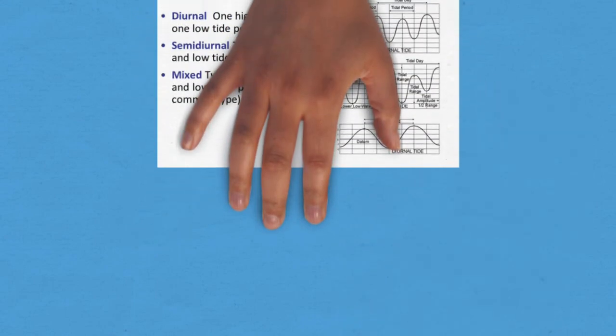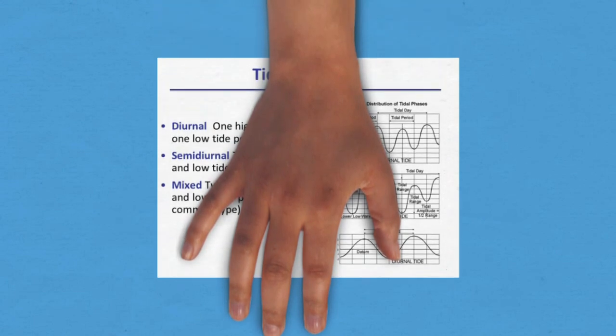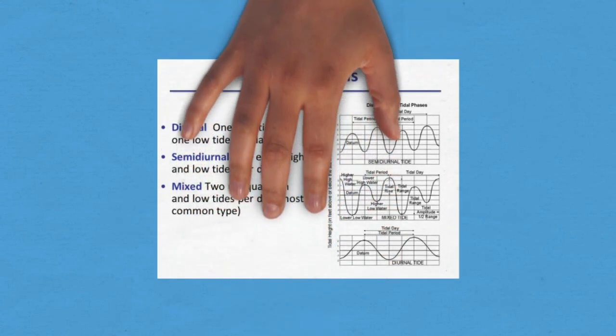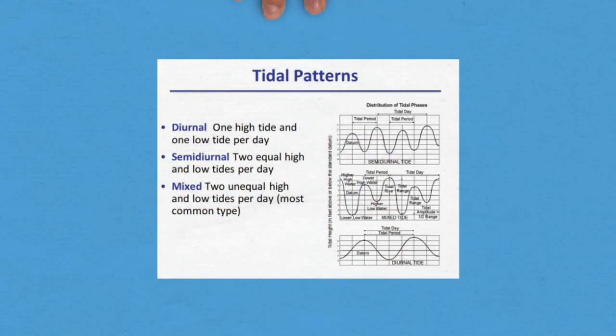Looking at the graphs and definitions: diurnal tides have one high tide and one low tide per day; semi-diurnal tides have two equal high and low tides per day; and mixed tides have two unequal high and low tides per day. Mixed tides are the most common type observed.